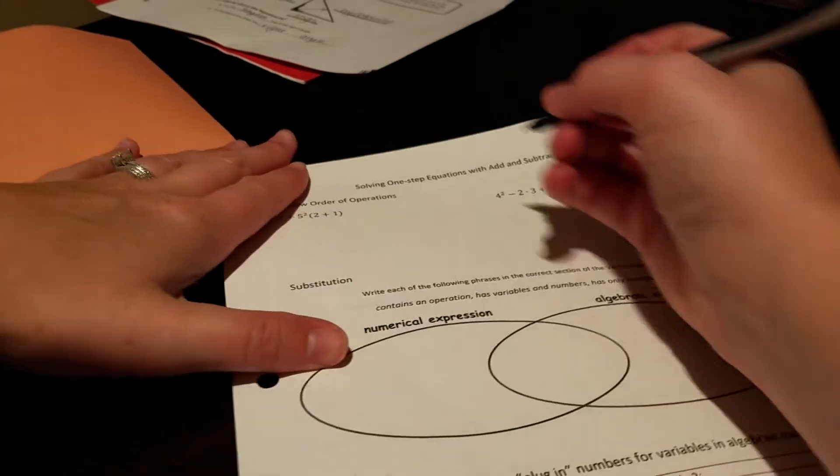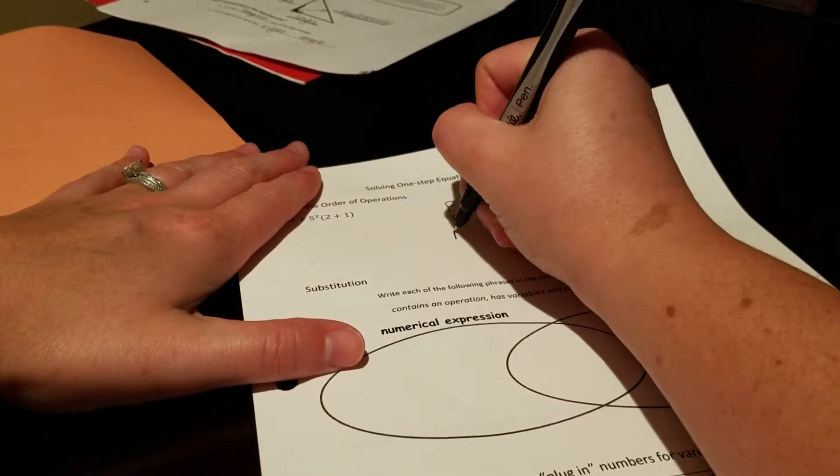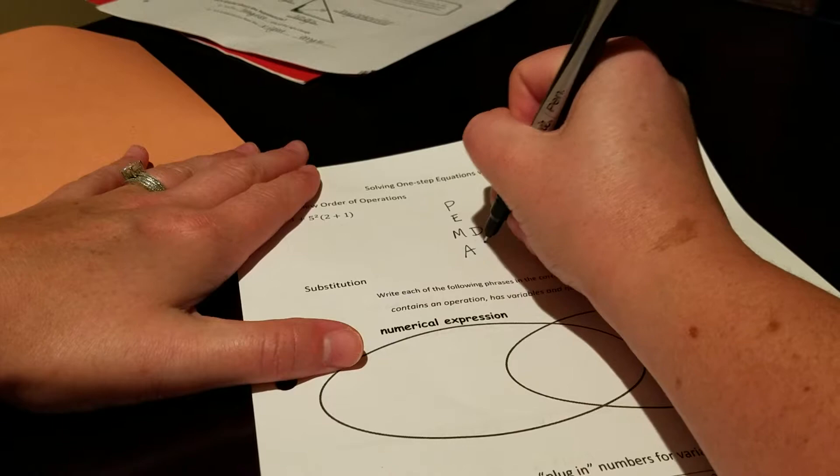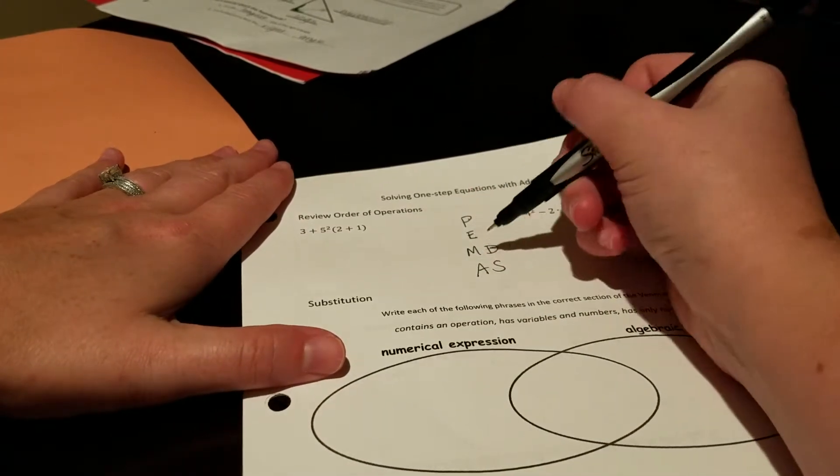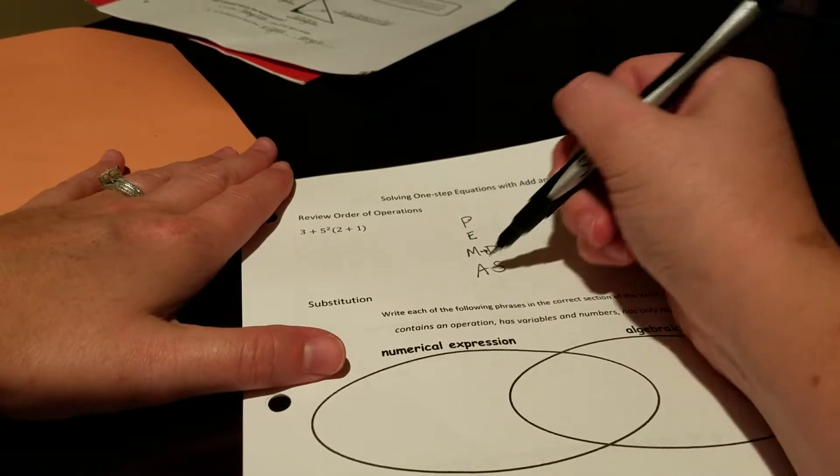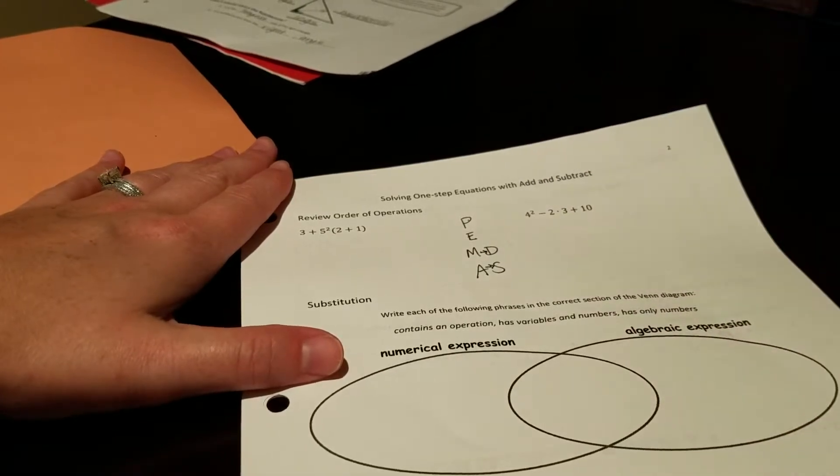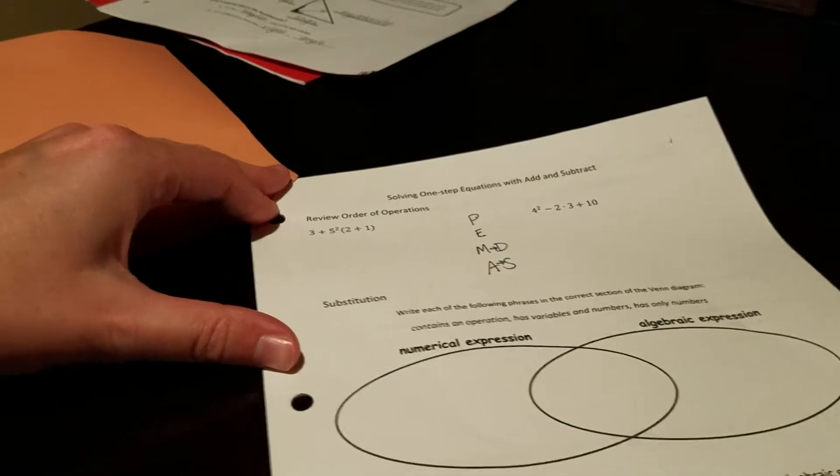So order of operations is that PEMDAS, and I'm going to put M and D and A and S on the same lines. So we have parentheses, exponents. When we're left with multiply and divide, we work left to right, and left with add and subtracting stuff, we work left to right, whatever we come across first.